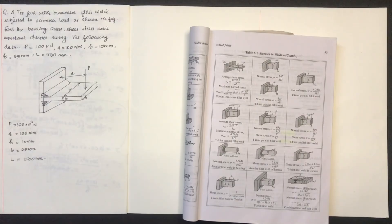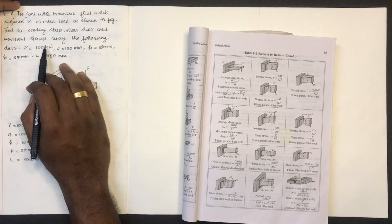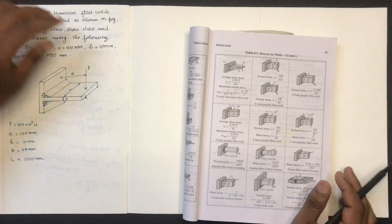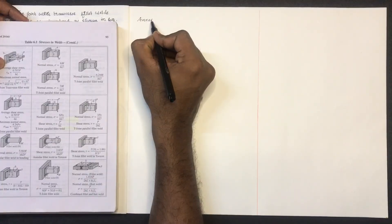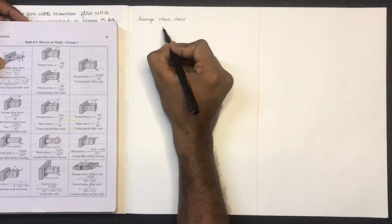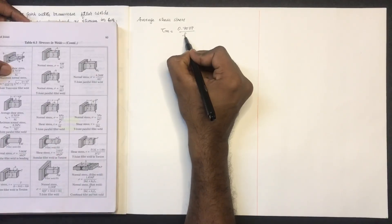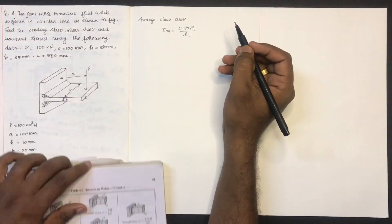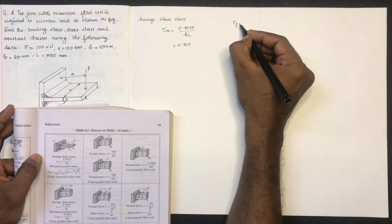We have to find the bending stress and shear stress. We have to find the average shear stress. The formula is: τ_m is equal to 0.707P divided by h into L. This gives us the average shear stress.